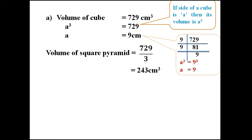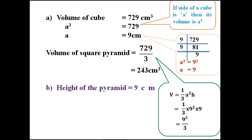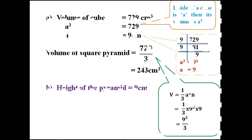We can do this problem another way: volume of a square pyramid is (1/3) × a² × h. Here a is 9, so that equals (1/3) × 9² × 9, or 9³/3, which is 729/3 = 243 cm³. For the second part, the height of the pyramid equals the height of the cube, or the side of the cube, that is 9 cm.